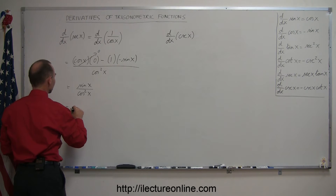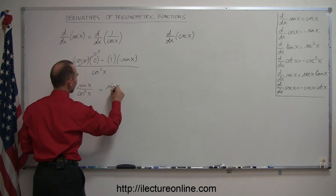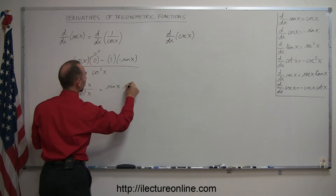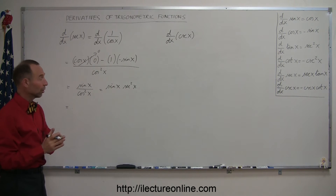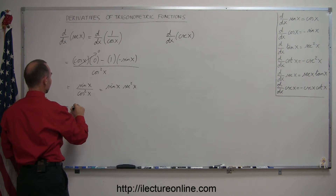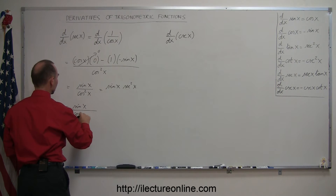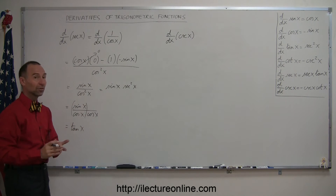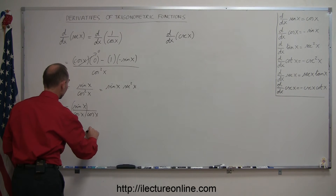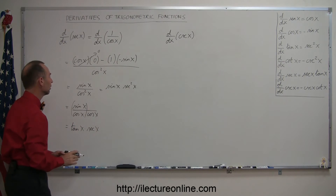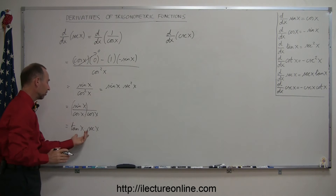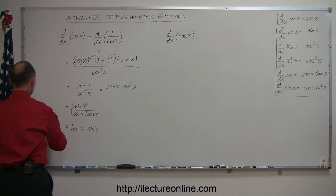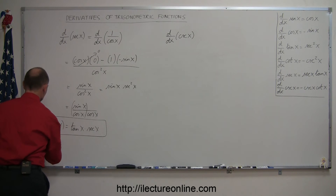So this can be written as sine of x times secant squared of x. We can also write it as sine of x over cosine of x times 1 over cosine of x — and sine over cosine is tangent of x, while 1 over cosine of x is secant of x. So the standard form is tangent of x times secant of x, which is what you'll find in most textbooks. Therefore, the d/dx of secant of x equals tangent of x times secant of x.